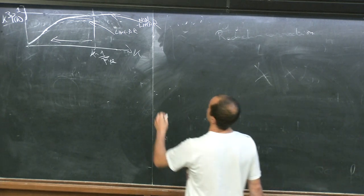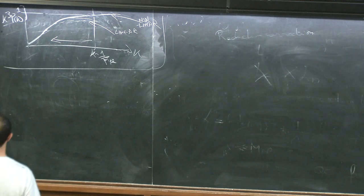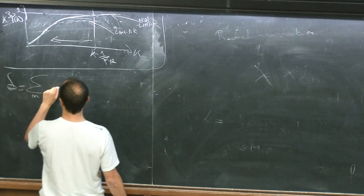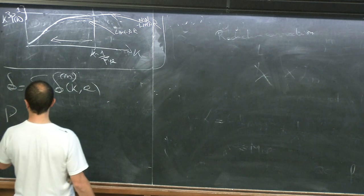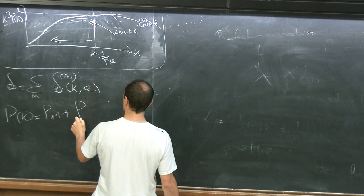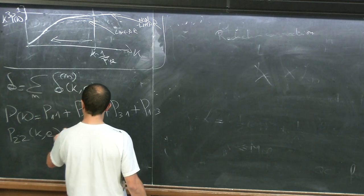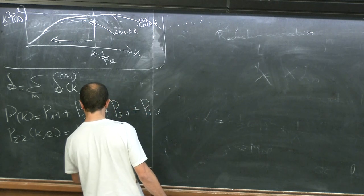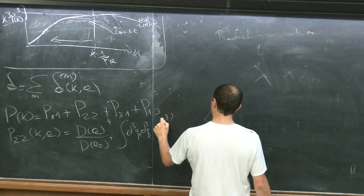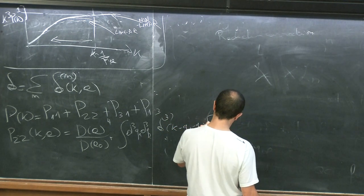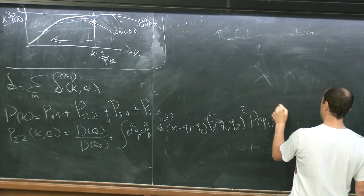Yesterday, we wrote down the equations for the long mode and started to compute the one-loop correction to the power spectrum — what I call one-loop, which is the fourth-order correction in delta. We wrote delta as a sum over n of delta_n of k and a, using a as time, and we wrote that P(k) equals P_11 — the linear theory — plus P_22, plus P_31, plus P_13. P_22(k, a) was D(a) to the fourth over D(a_0) to the fourth, times the integral d³q, delta³(k minus q1 minus q2), F_2(k minus q1, q2) squared, times P_11(q1) P_11(q2).